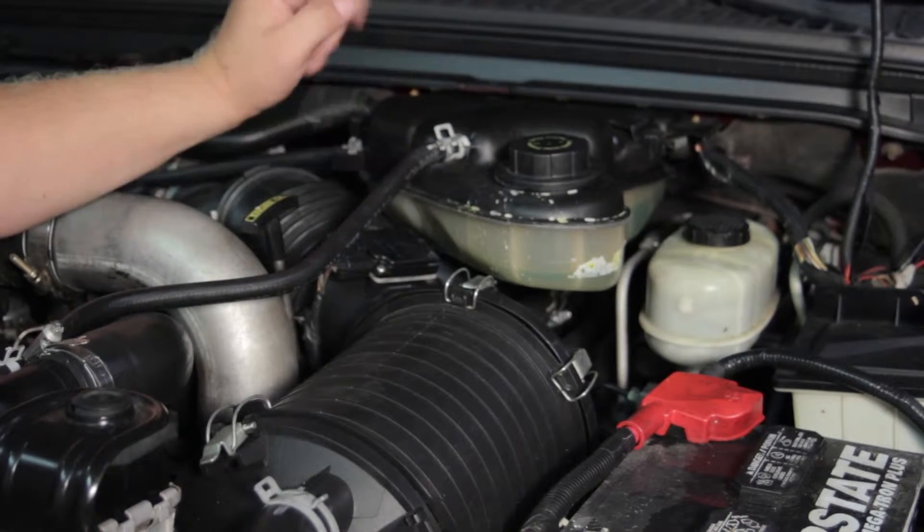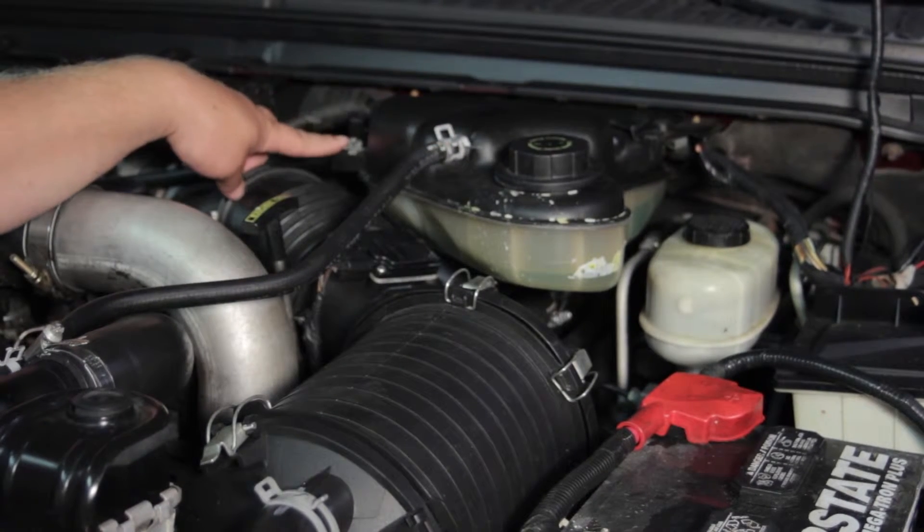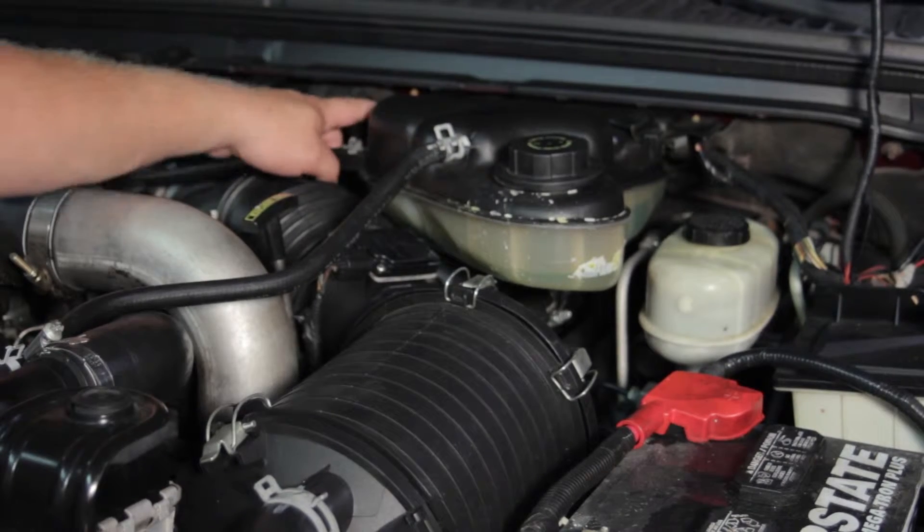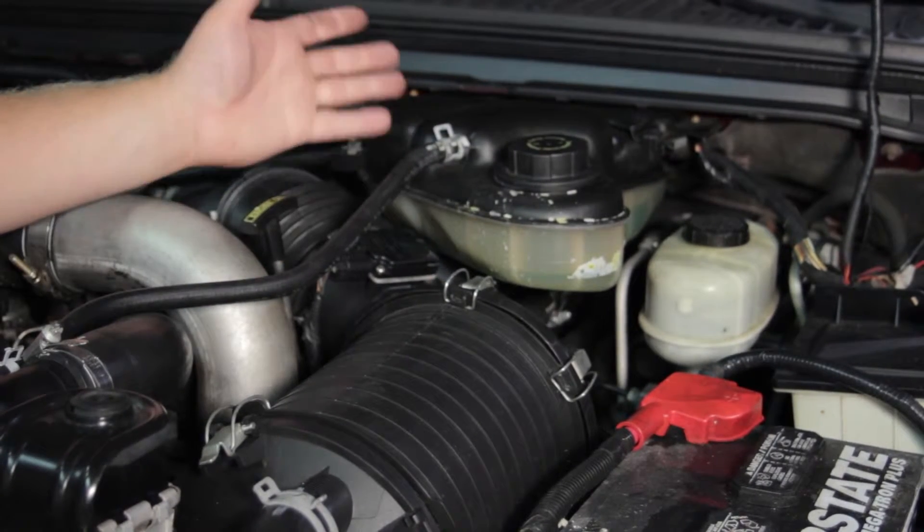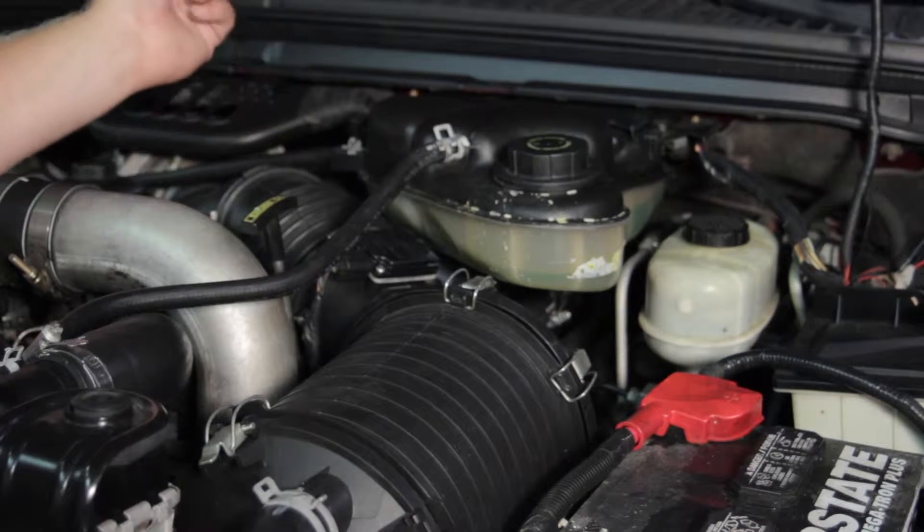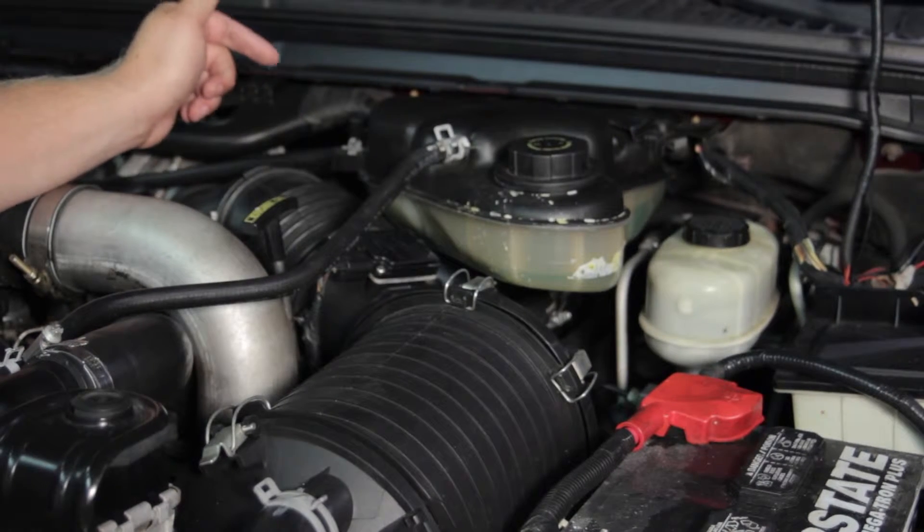Whatever you want to call it, it's still got to get out of the way. So there's a couple hose clamps we'll pull out of the way here. There's two bolts securing it and there's another hose underneath. Those are going to be removed and it gives us great access to the FICM itself.